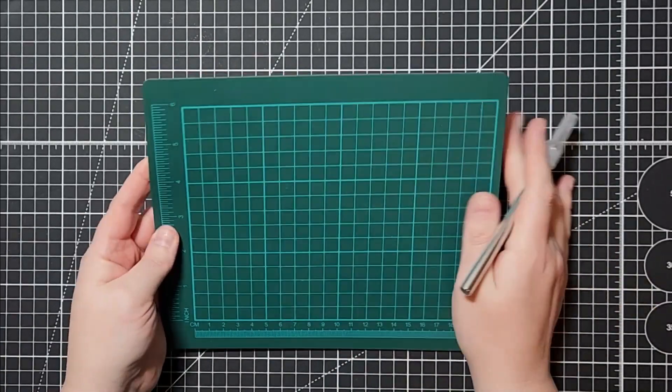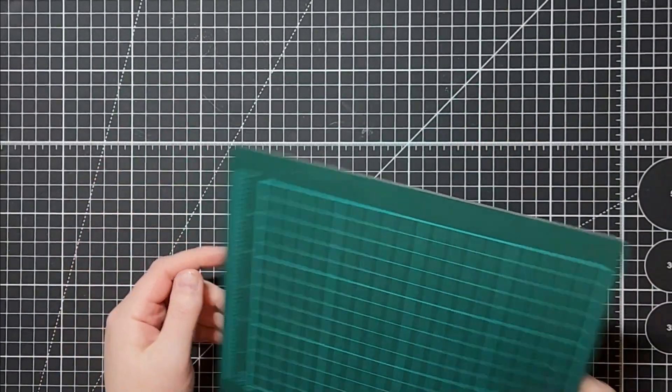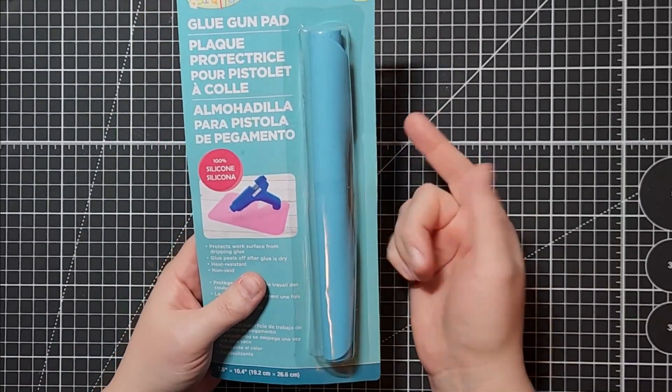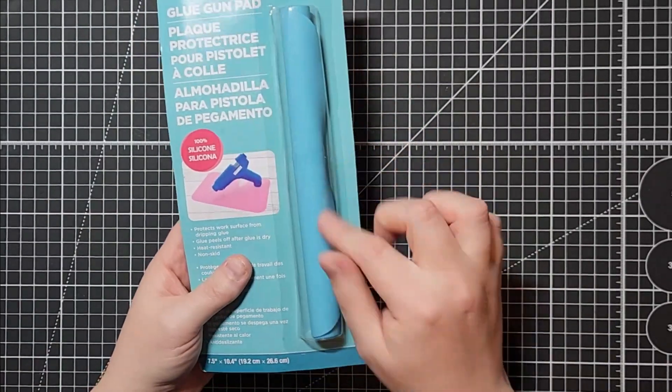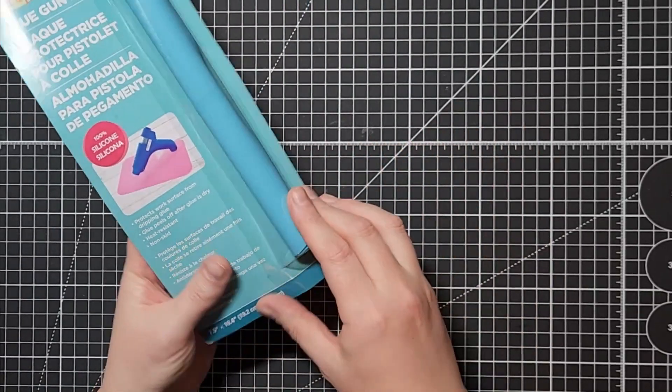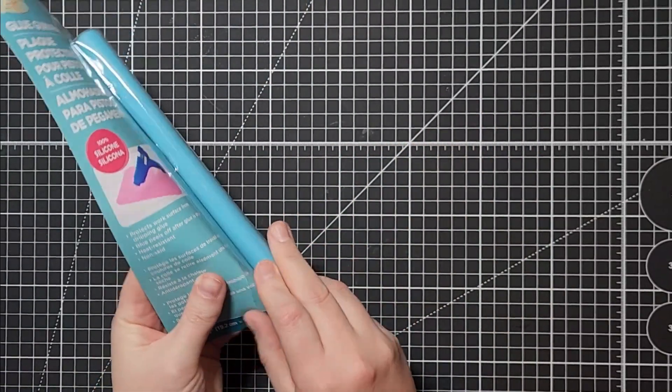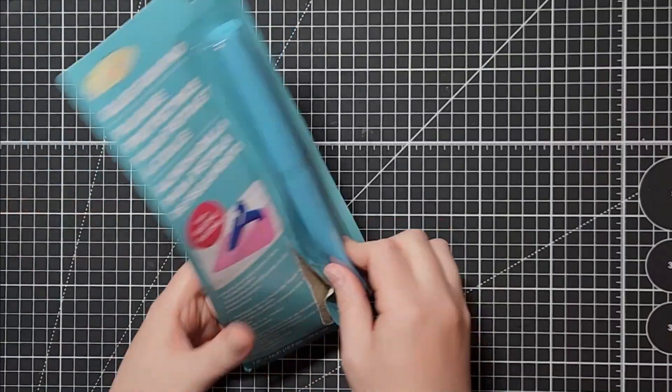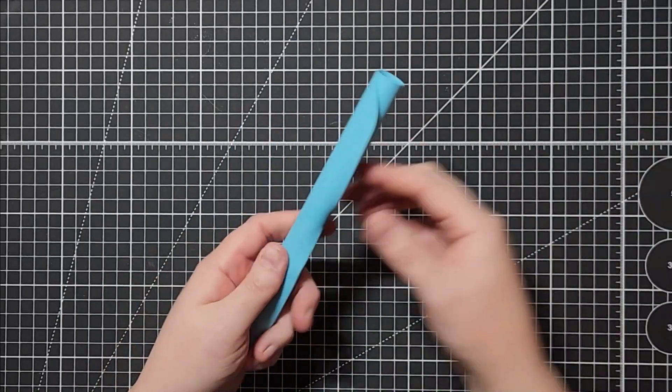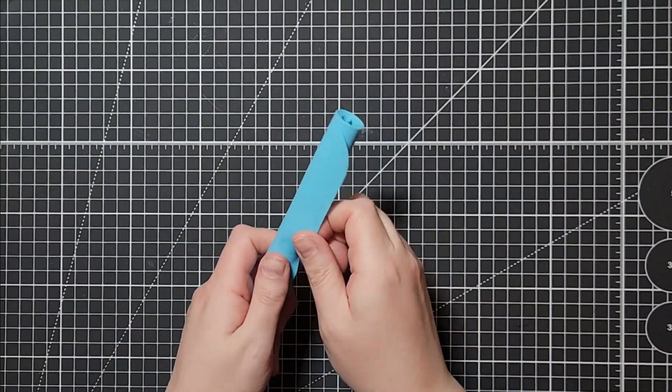This is a glue gun pad that I found, it was only $2.50. I figured it's silicone so I could probably use it as a like anti-skid mat that you find for your cardstock. I'm actually going to test that now because the silicone mats you find can get pretty expensive.